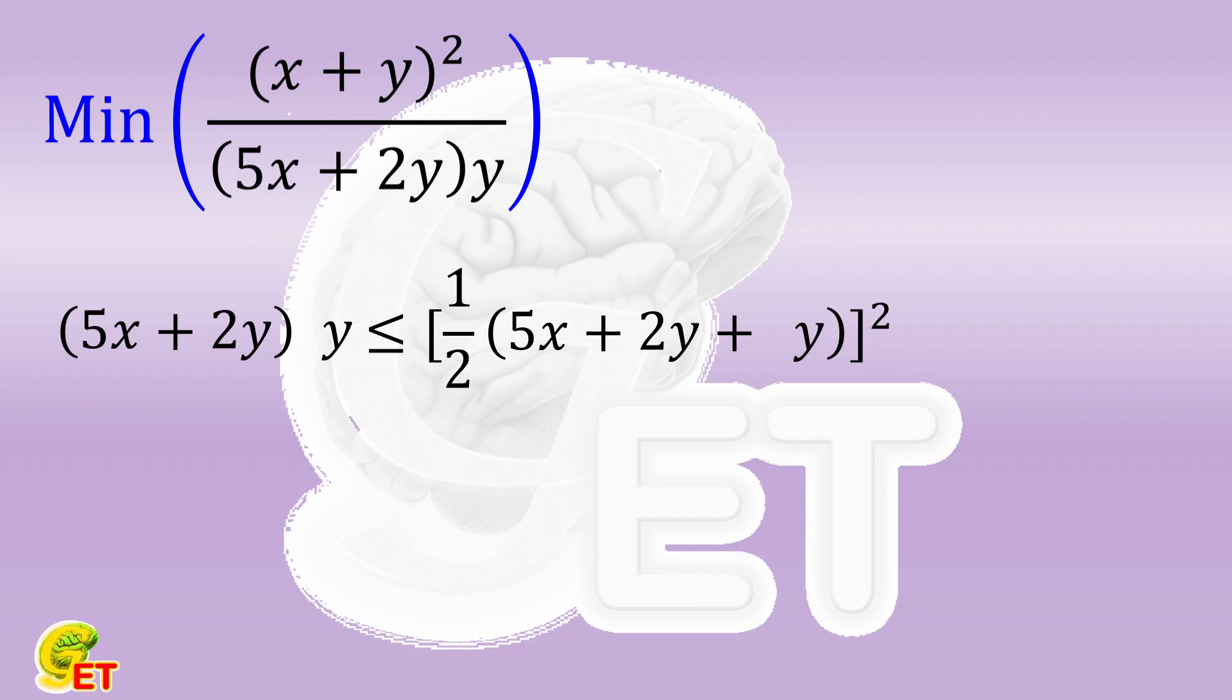So let's take a look at the numerator. The coefficients of x and y are both 1. That is, only when the coefficients of x and y in the denominator are equal can the constant be obtained by reducing the fraction. Now we have 5x and 2y, so we need another 3y if we want to make their coefficients the same.